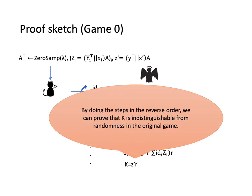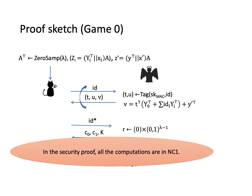By doing the steps in the reverse order, we can prove that K is indistinguishable from randomness in the original game, which completes our proof. Also, notice that in the security proof, we did not compute the inverse of the matrix and all the computations are in NC¹. Otherwise, the proof does not hold.